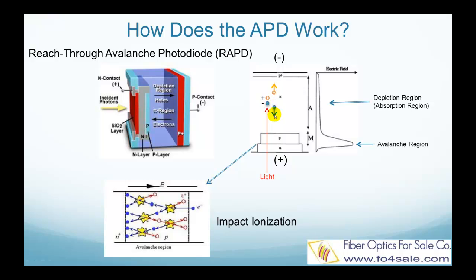On the other side, the electron enters the P region. It is accelerated by the high electric field and then impacts other atoms, as shown in the lower-left picture. In this high-field region, the field accelerates the electrons to such a high speed that they create more electron-hole pairs through collisions. This process is called impact ionization. These electrons and holes are then accelerated, and in turn create even more free electrons and holes, leading to the avalanche effect.